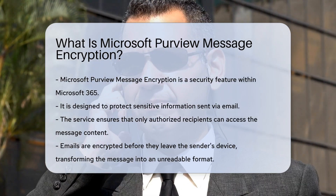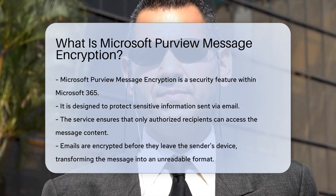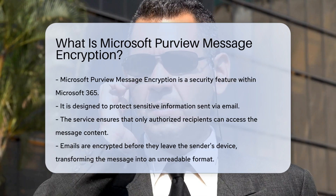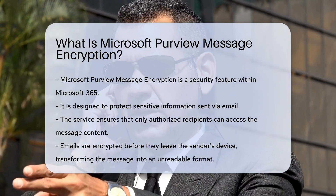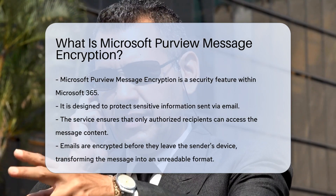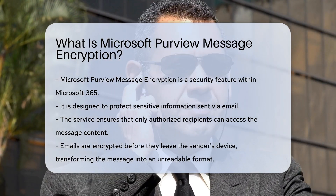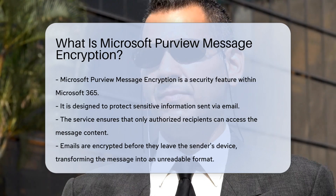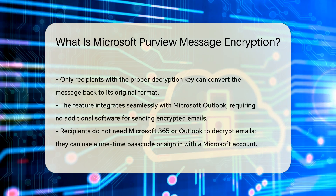This encryption service ensures that only authorized recipients can access the content of the message. When you send an email using Microsoft Purview Message Encryption, the content is encrypted before it leaves your device. This means that the message is transformed into an unreadable format, and only the intended recipient, who has the proper decryption key, can convert it back to its original format.